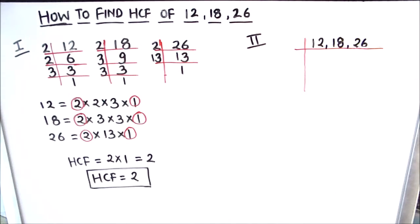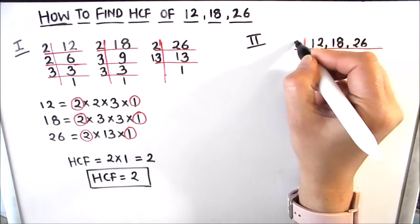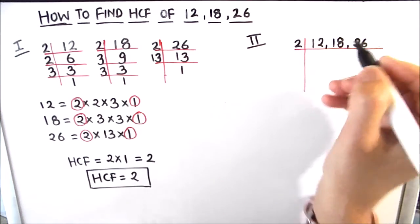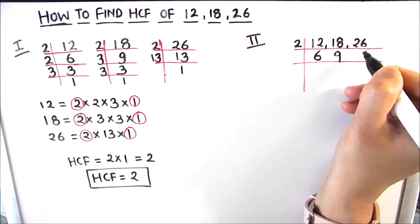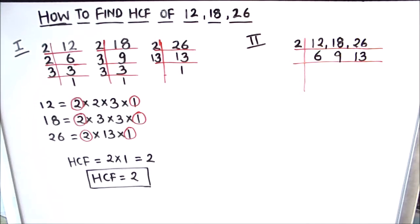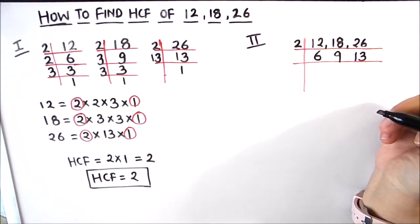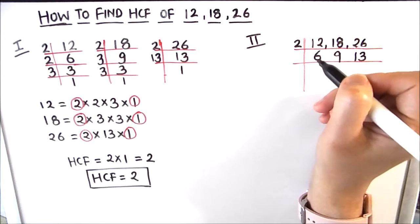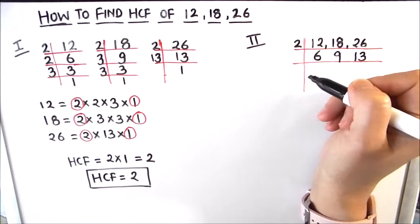In the single ladder method, we write 12, 18, and 26 together. Since all three numbers are even, we can use 2 to divide them: 2 times 6 is 12, 2 times 9 is 18, and 2 times 13 is 26. So now we have 6, 9, and 13 remaining.